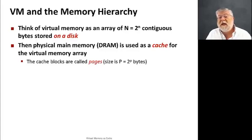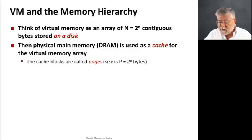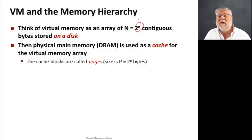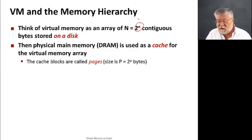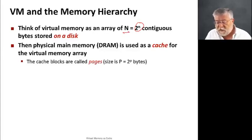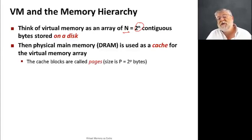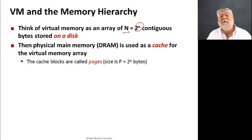Virtual memory is a contiguous array in memory of 2 to the n bytes, where n is the number of address bits in our architecture. So 2 to the 64 for our case. That's a very large amount of space — 16 exabytes. The physical main memory, the dynamic RAM in our computer system, can now be thought of as a cache for that giant virtual memory array.